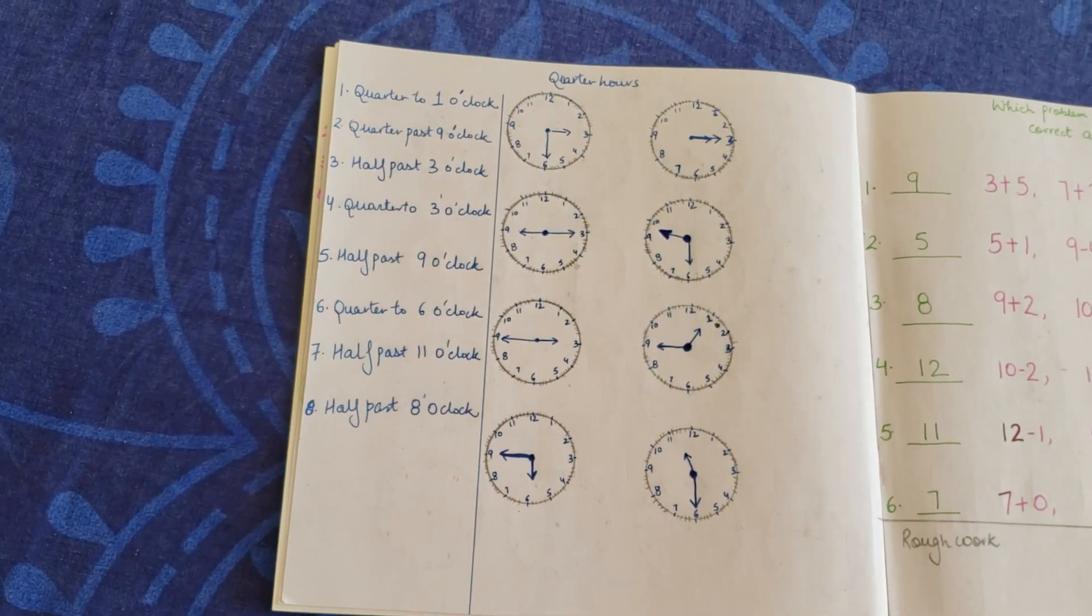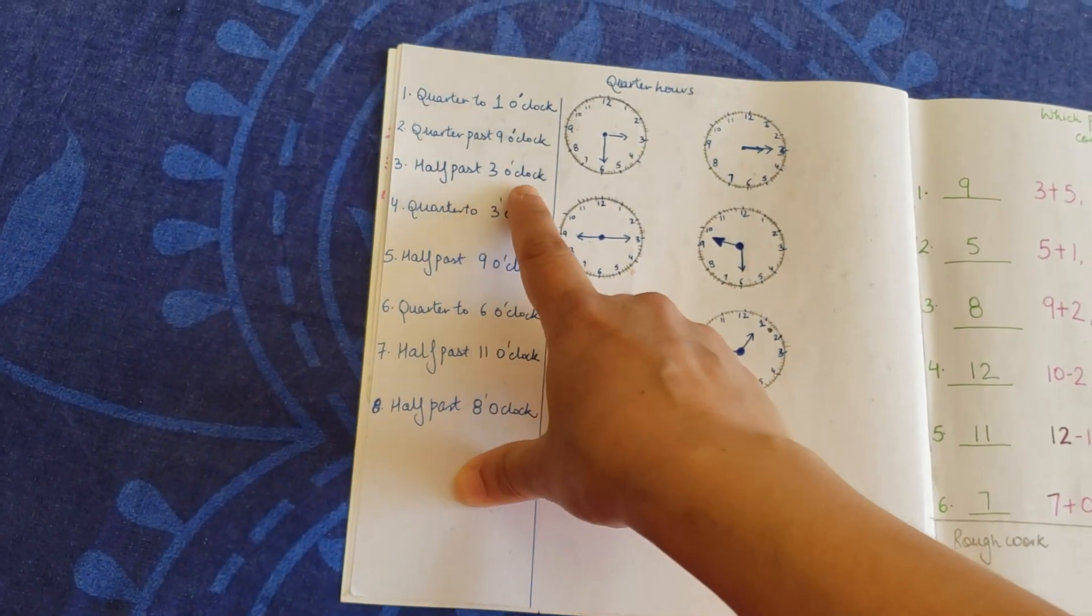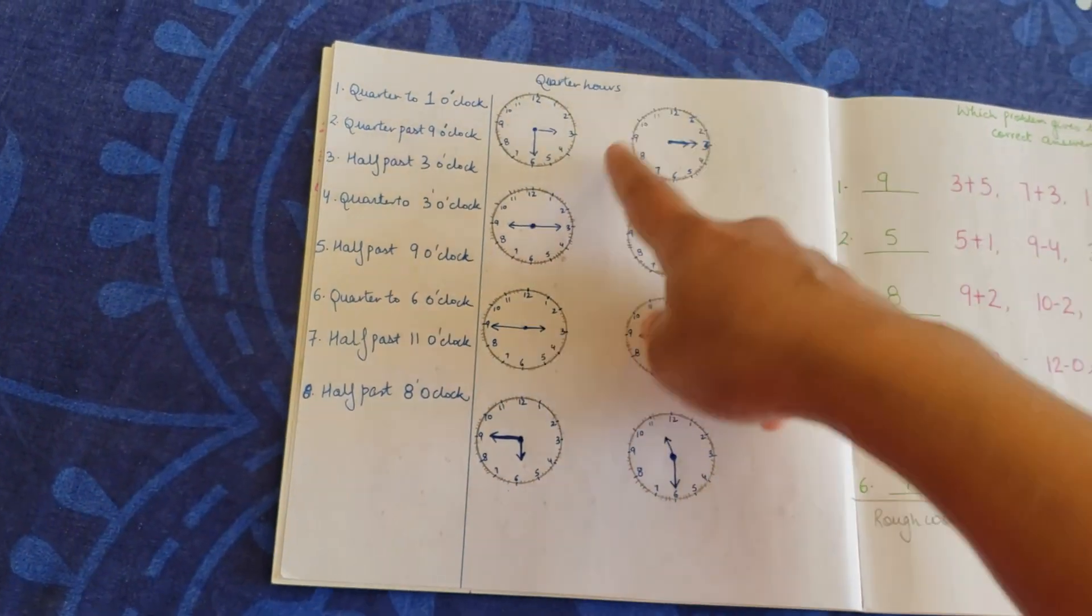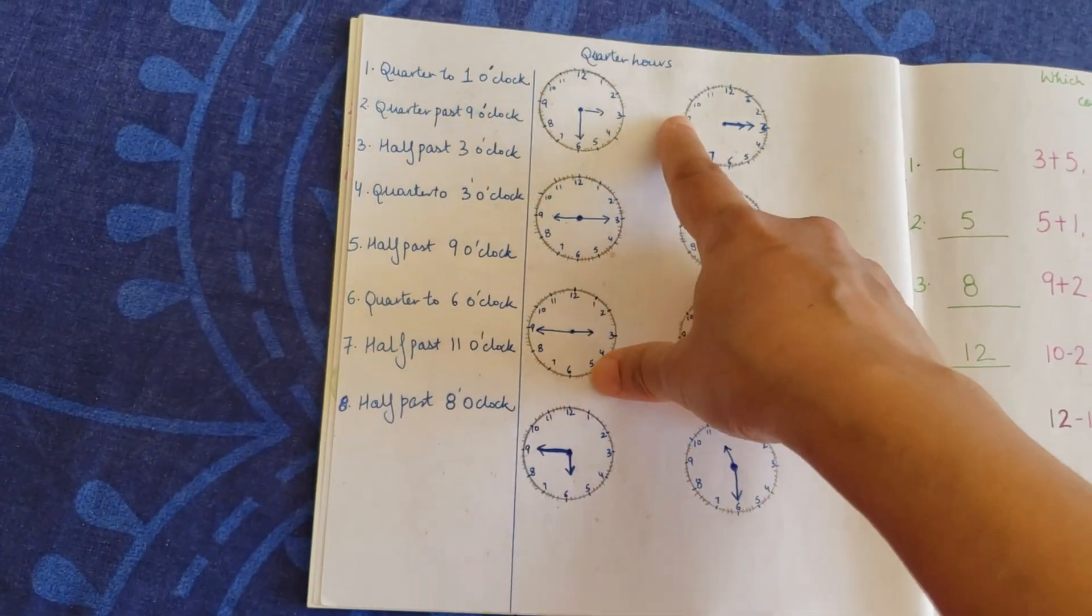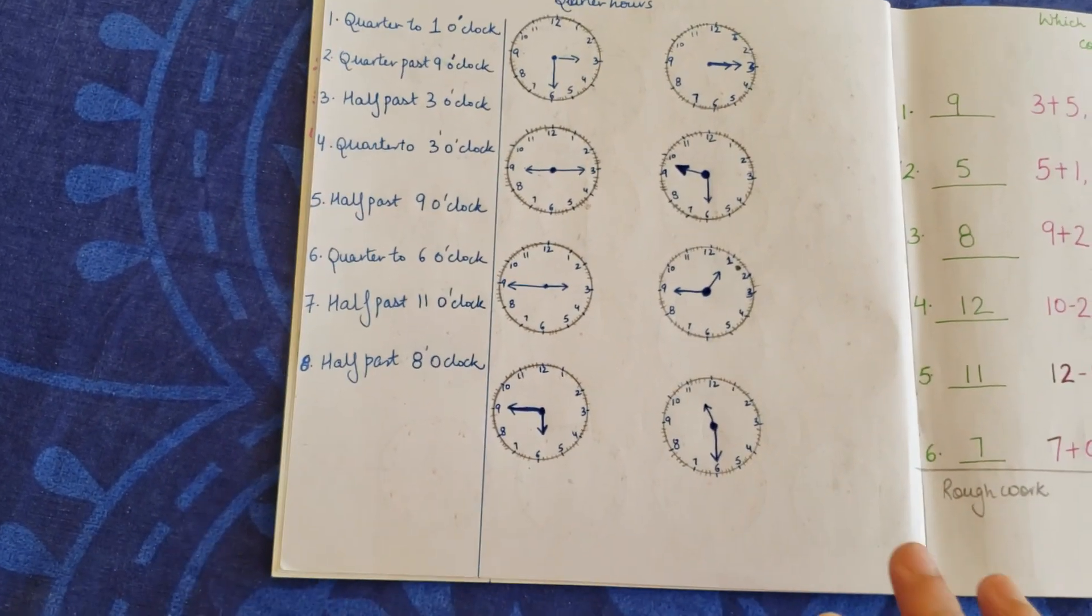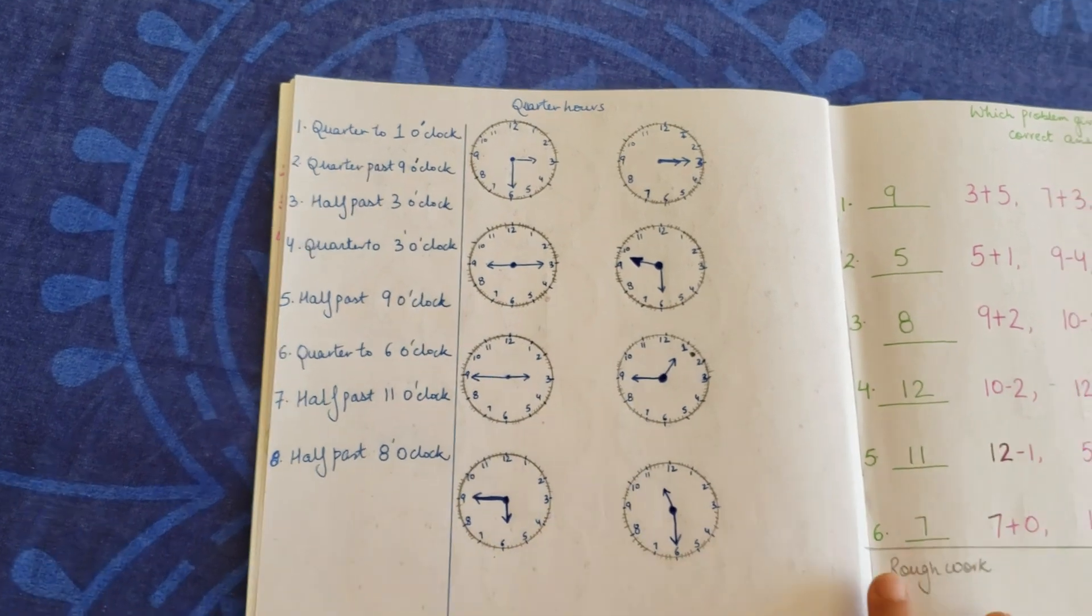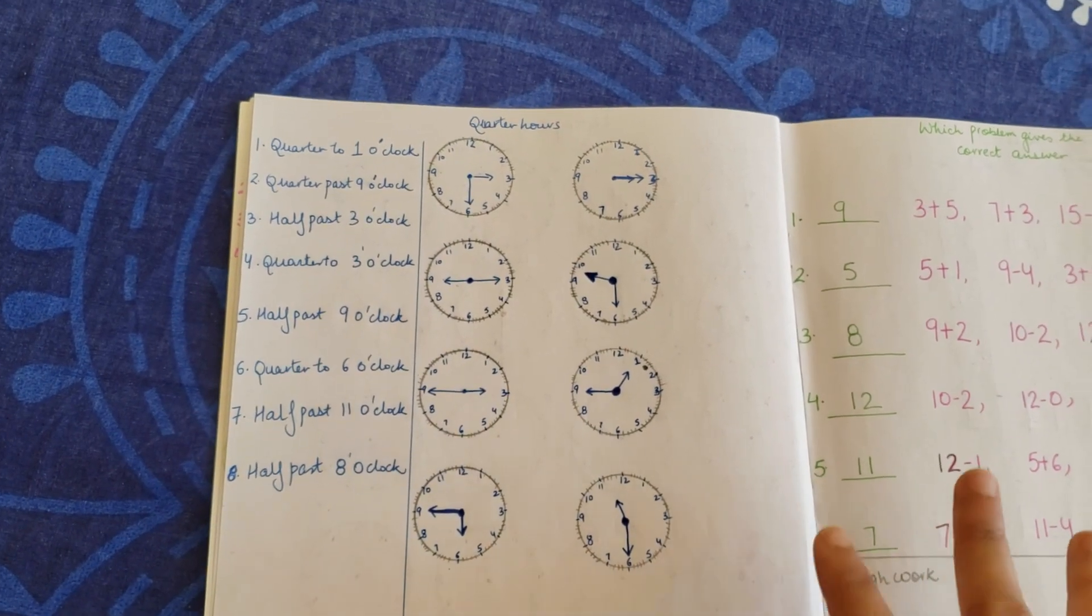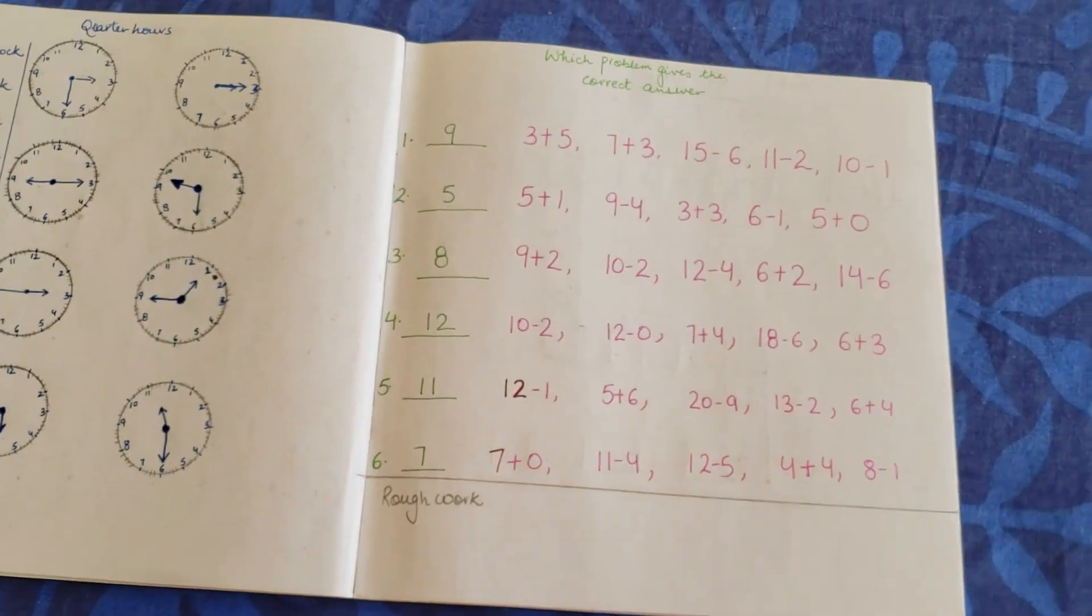Then we have another one which is quarter hours. That's like quarter to one o'clock, quarter past nine o'clock, half past three o'clock, quarter to three o'clock. You have all the timings here. He needs to look at the number and write the number correspondingly. If you guys think this is way too hard for your kids, just try it simple and adapt to the time or adapt the way he likes or he can do it.